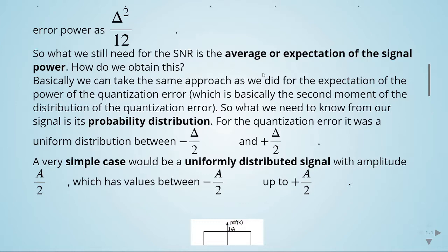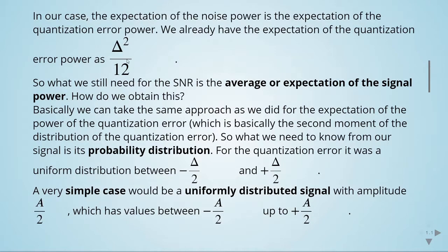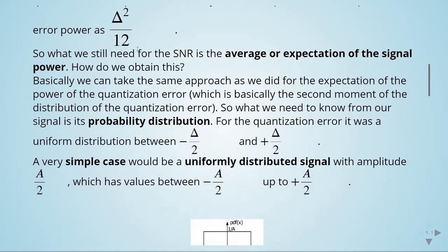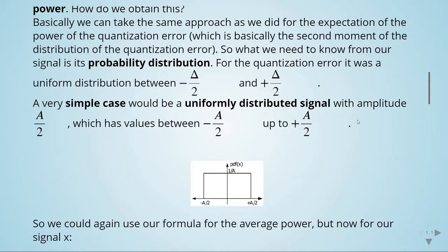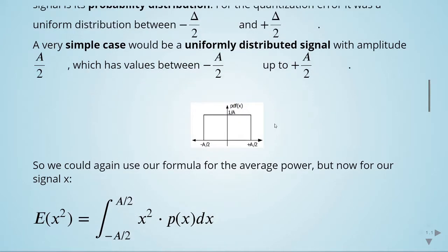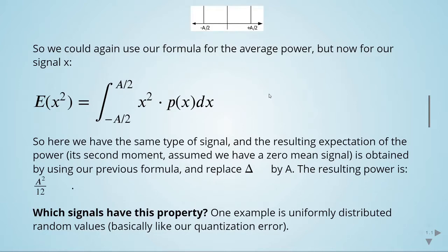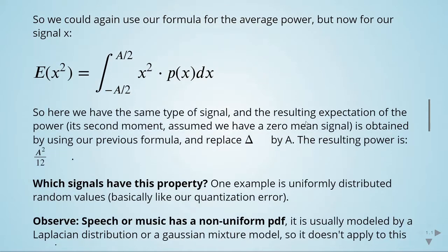A simple case is to calculate the expectation of the signal power for a uniformly distributed signal with amplitude a divided by 2, which has values between minus a divided by 2 up to plus a divided by 2. This is exactly the same case as we calculated for the quantization error — we just replace the step size with a. The probability distribution is 1 over a, and using our formula for average power, the resulting signal power is a squared divided by 12.